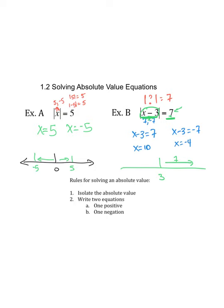What's 7 units to the right? 10. What's 7 units to the left? Negative 4. That's our two answers.